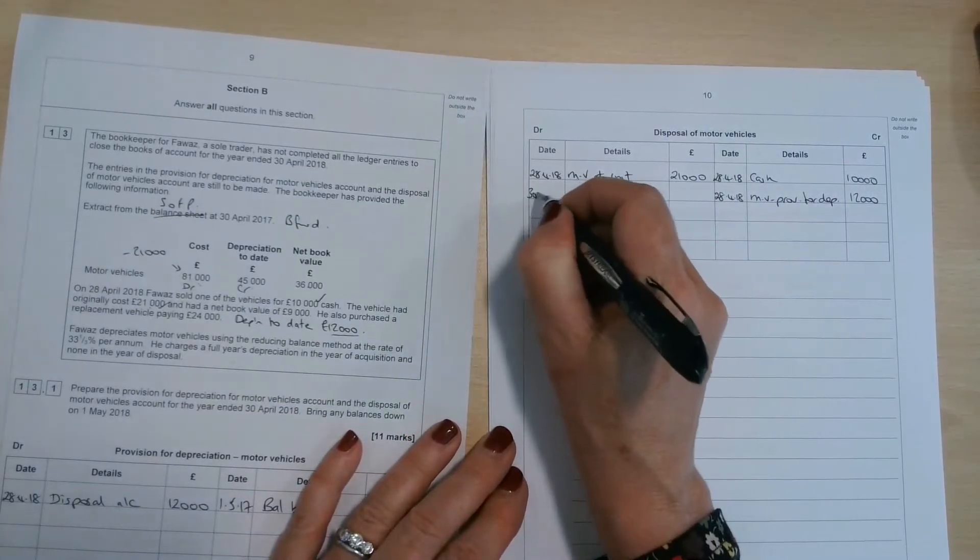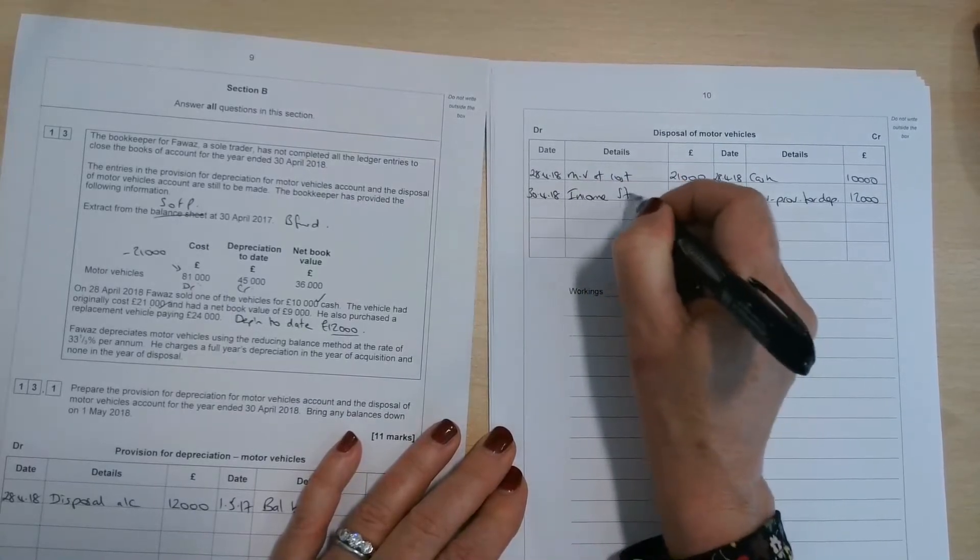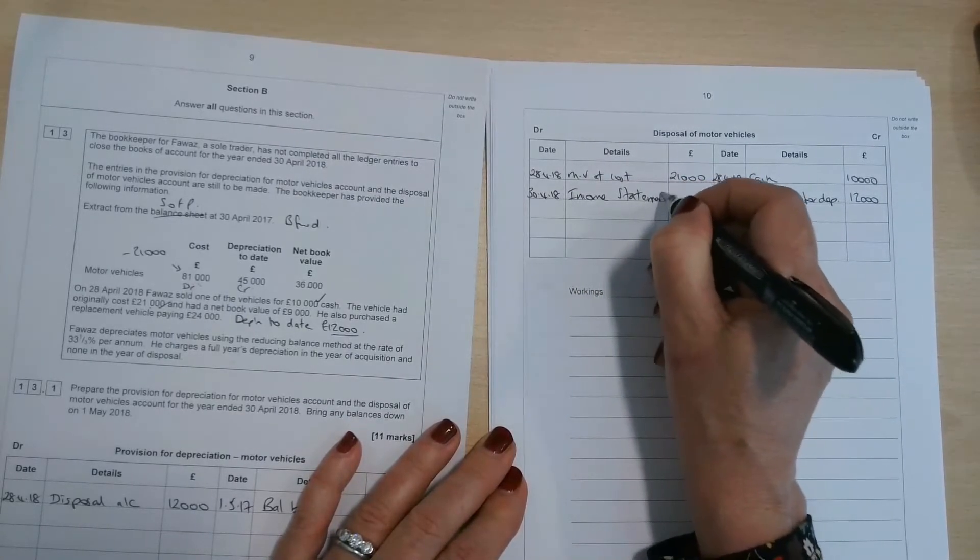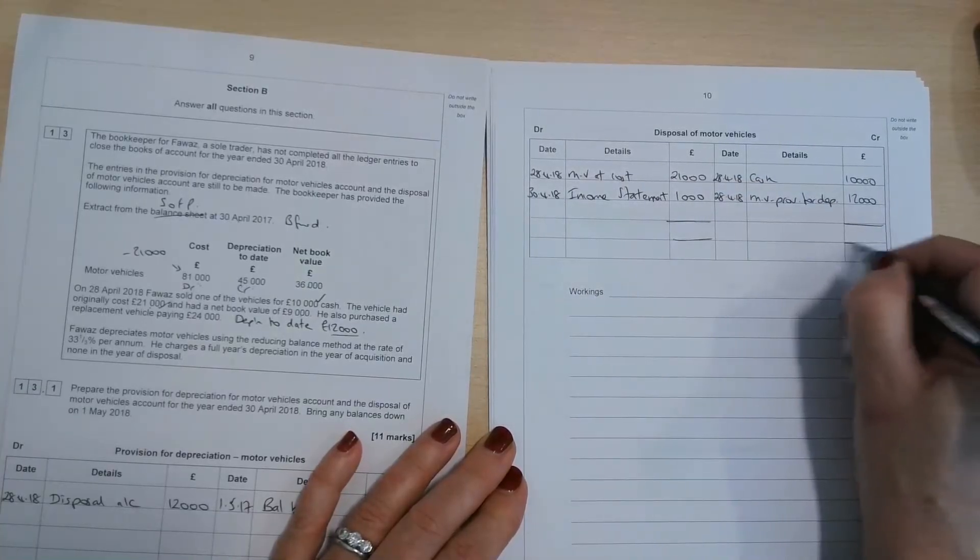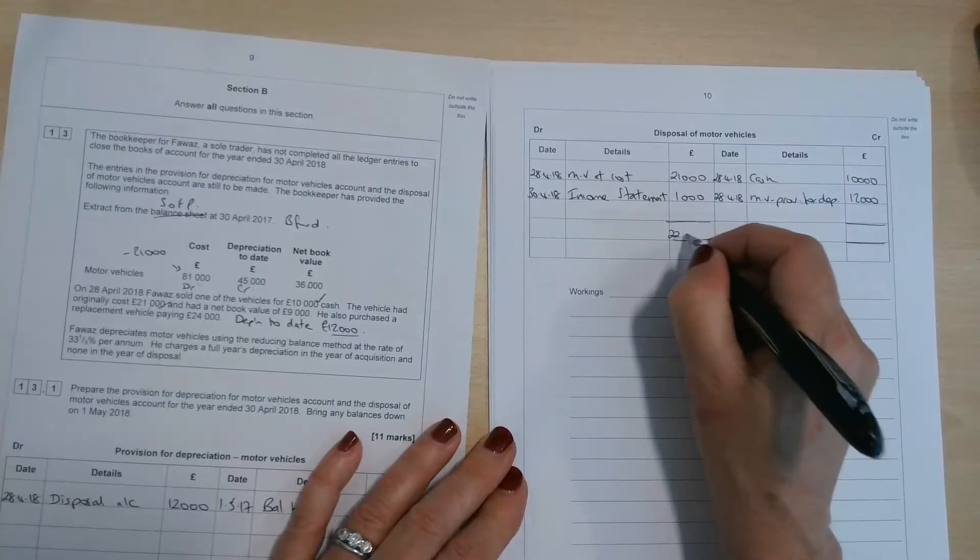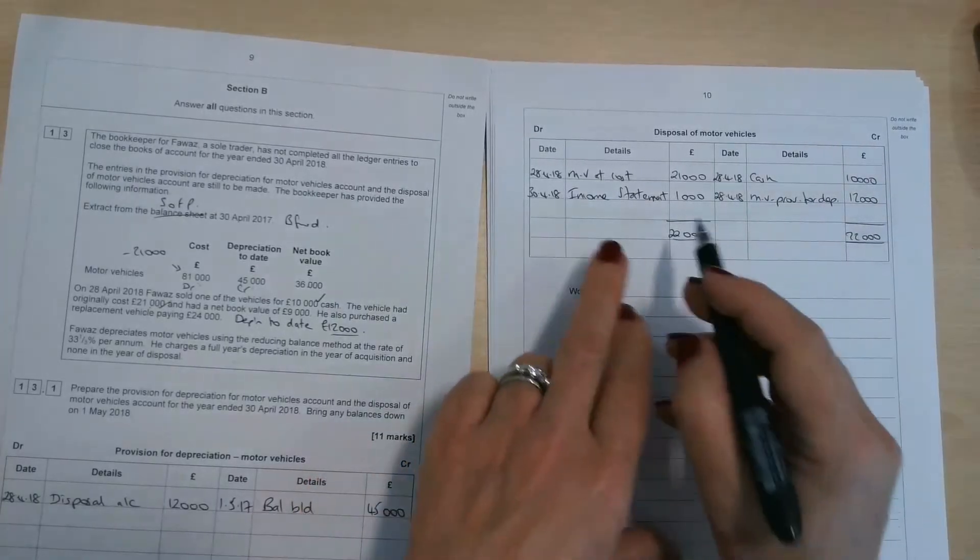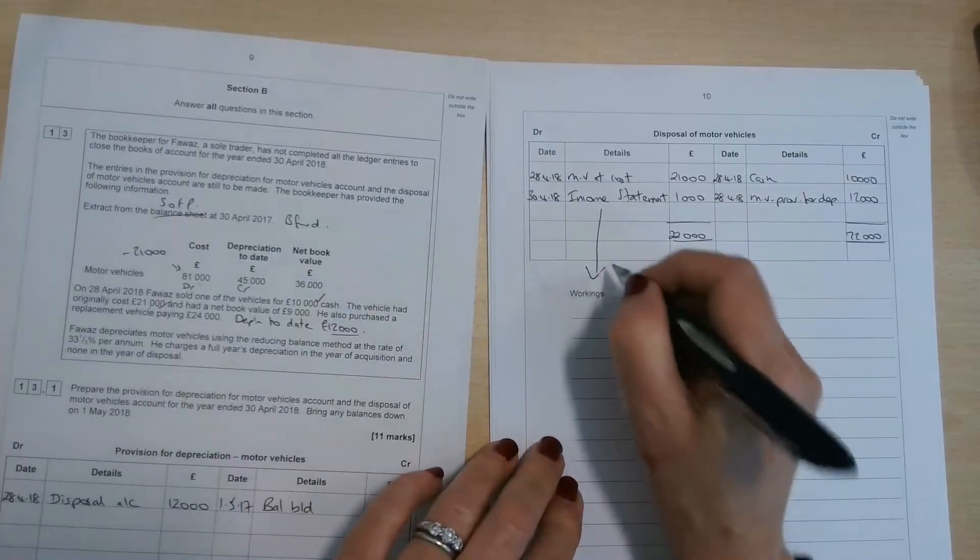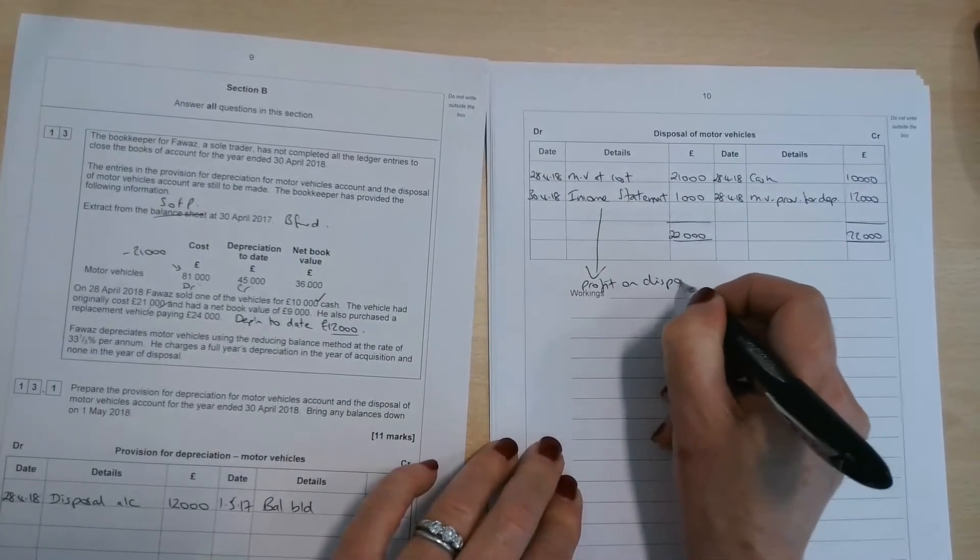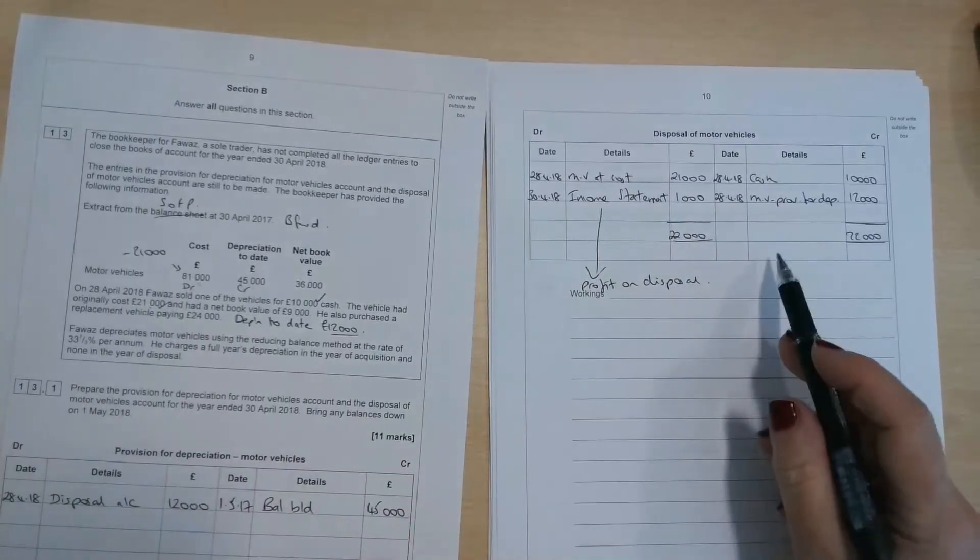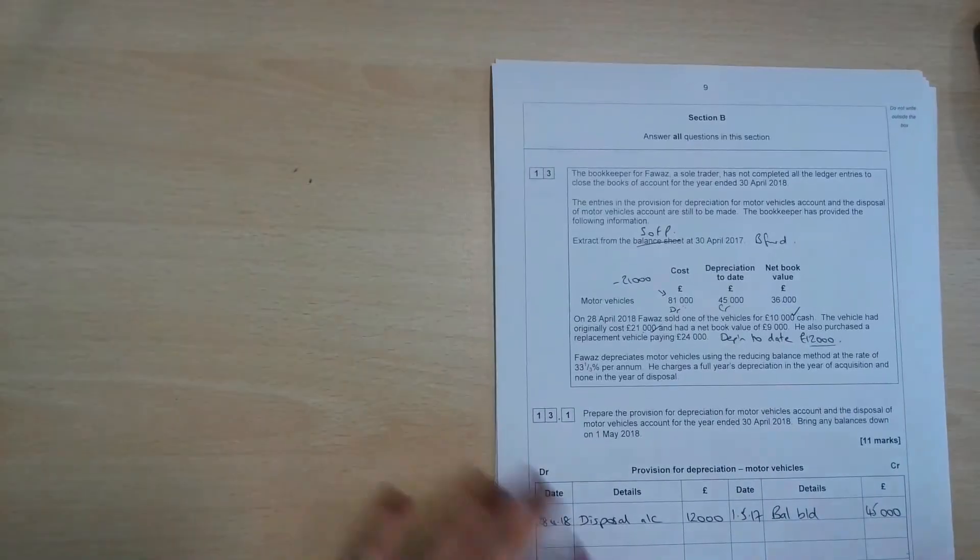We've actually sold it for £10,000. So in this instance, when we get to the end of the year, 30th of April 2018, we're going to be making a transfer to the income statement of that difference of £1,000. So the whole purpose of the disposal account is that the two sides need to add up. So we've got £22,000 on there. The account needs to balance with BALCD. That transfer to the income statement is the profit on disposal of £1,000. So the difference between the net book value and the sale proceeds.